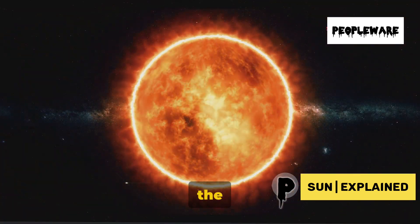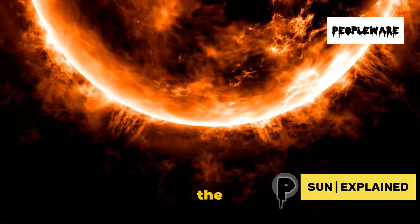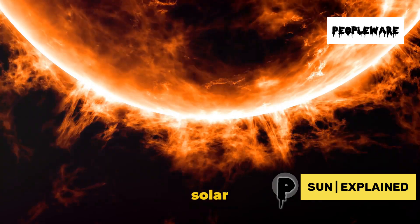We then reach the photosphere, the Sun's visible surface. Above this, we find the chromosphere and the corona, the Sun's outer layers, which are visible during a solar eclipse.